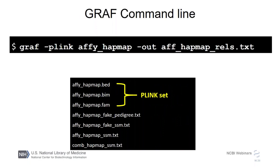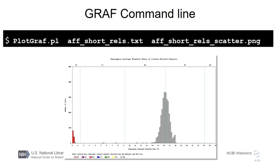An example command line could be as simple as: graph with the option plink — most of you are probably familiar with plink sets, which include BED, BIM, and FAM file types. You specify that plink set and output a table of relationships. Other options include adding a sample-subject mapping file if your sample and subject IDs differ, or adding a pedigree file. After running that first graph run to get the text output file, you can then plot it using one of the Perl scripts — plot_graph.perl — which creates a PNG file for you.